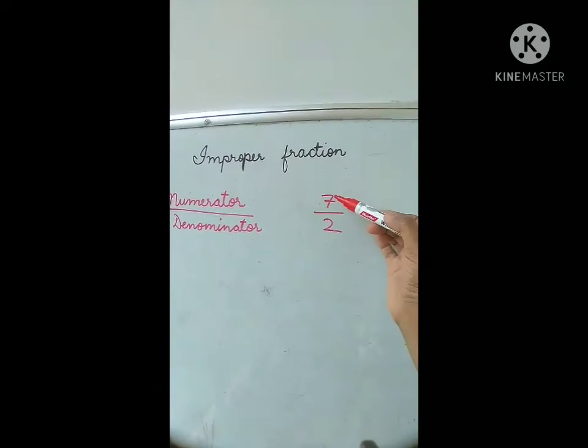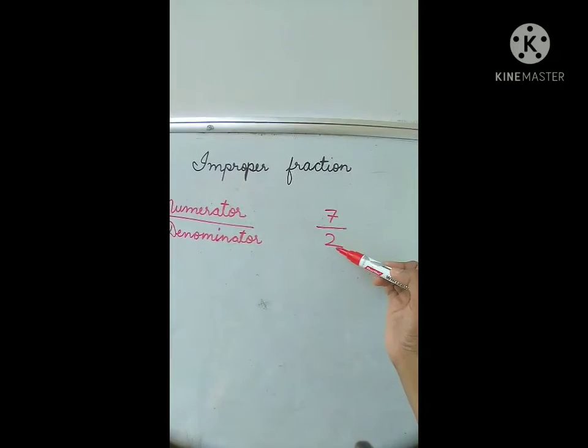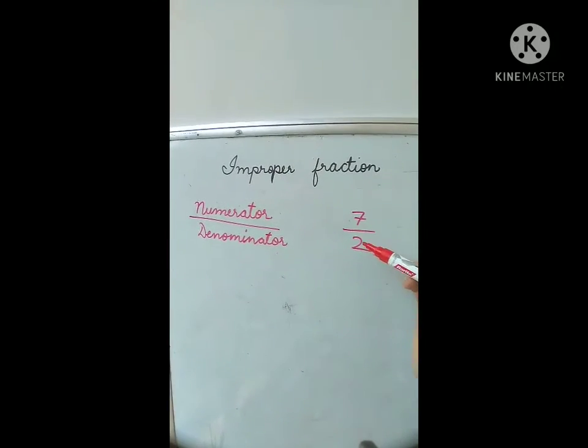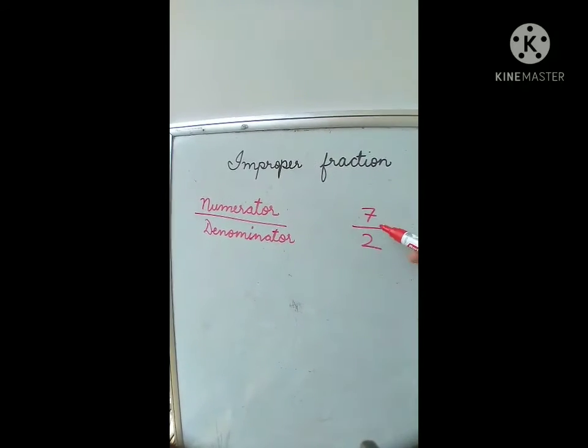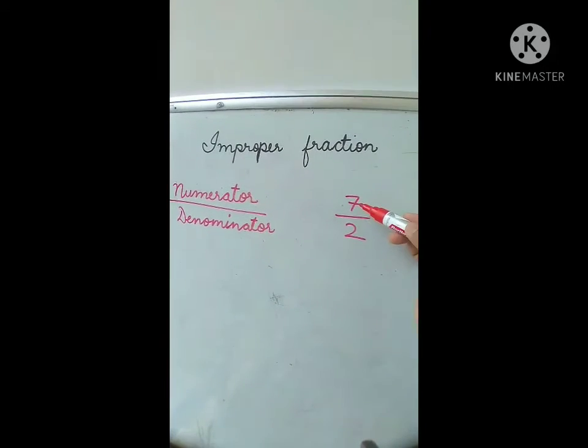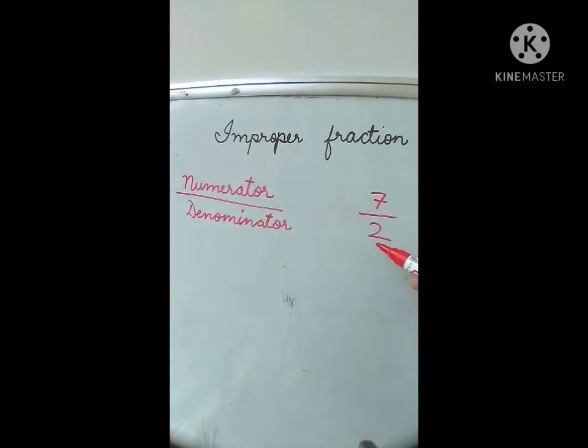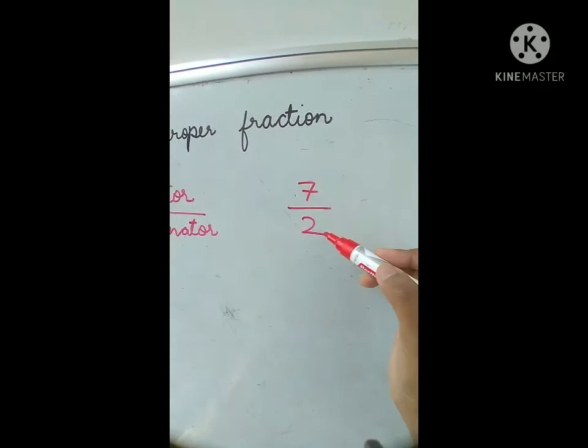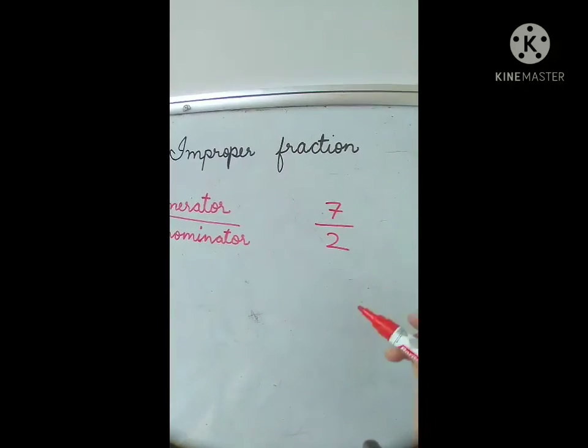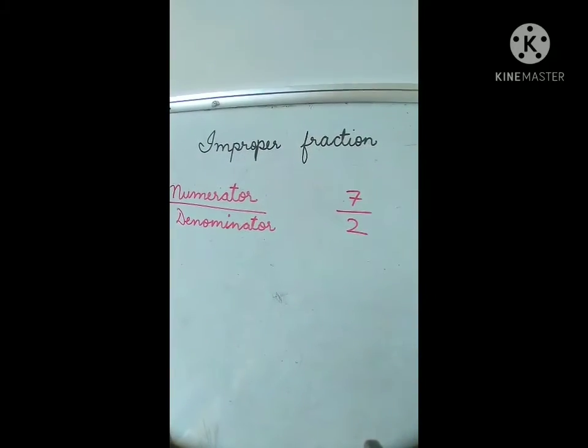For example, 7 by 2 is a fraction. Improper fraction is that fraction in which numerator is a bigger number and denominator is a smaller number. Now here, 7 is a bigger number, right? 2 is a smaller number. So this is improper fraction. Got it?